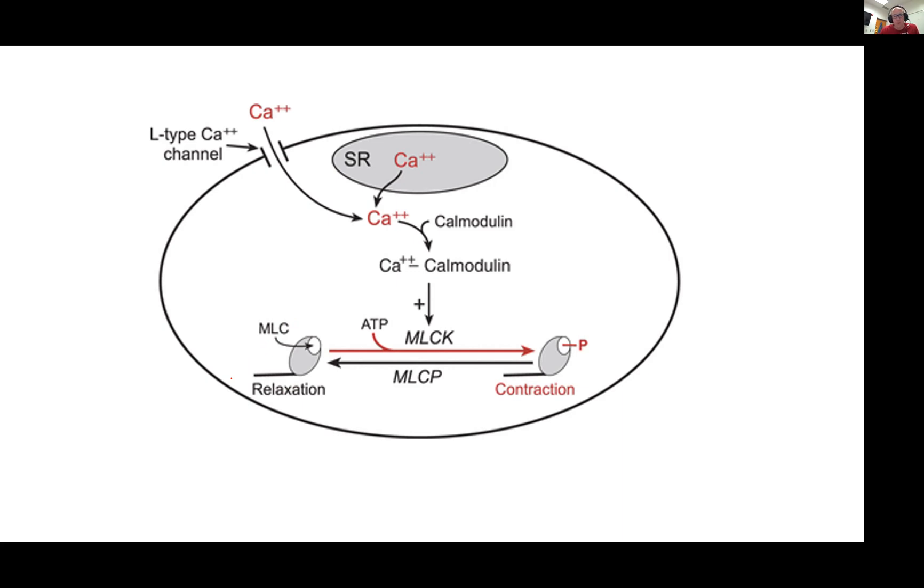If you remember in skeletal muscle, calcium binds to troponin, which helps move tropomyosin, thereby exposing binding sites for myosin on the actin. Well, in smooth muscle, we have a different setup.